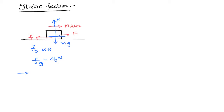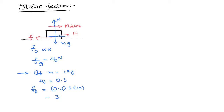Let us assume the mass of the body is 1 kilogram, coefficient of friction is 0.3, and acceleration due to gravity is approximately 10 m/s². Then Fs = μs × N = 0.3 × 1 × 10 = 3 newton. But be careful — this 3 newton is not the frictional force that always exists. This is actually called the maximum static frictional force, sometimes also called the limiting frictional force.